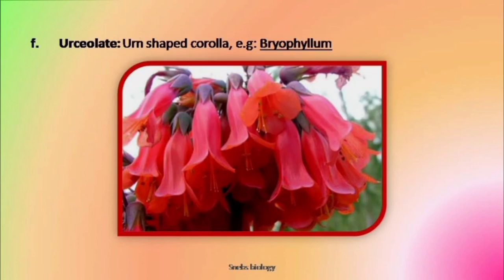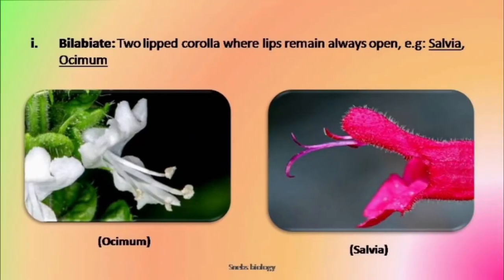Another type of corolla is urceolate — here the corolla is urn-shaped; for example, Bryophyllum. Next, one more is known as bilabiate — here the petals are fused to form lips-like structure, appearing as an upper lip and a lower lip. It is found in Salvia and Ocimum.